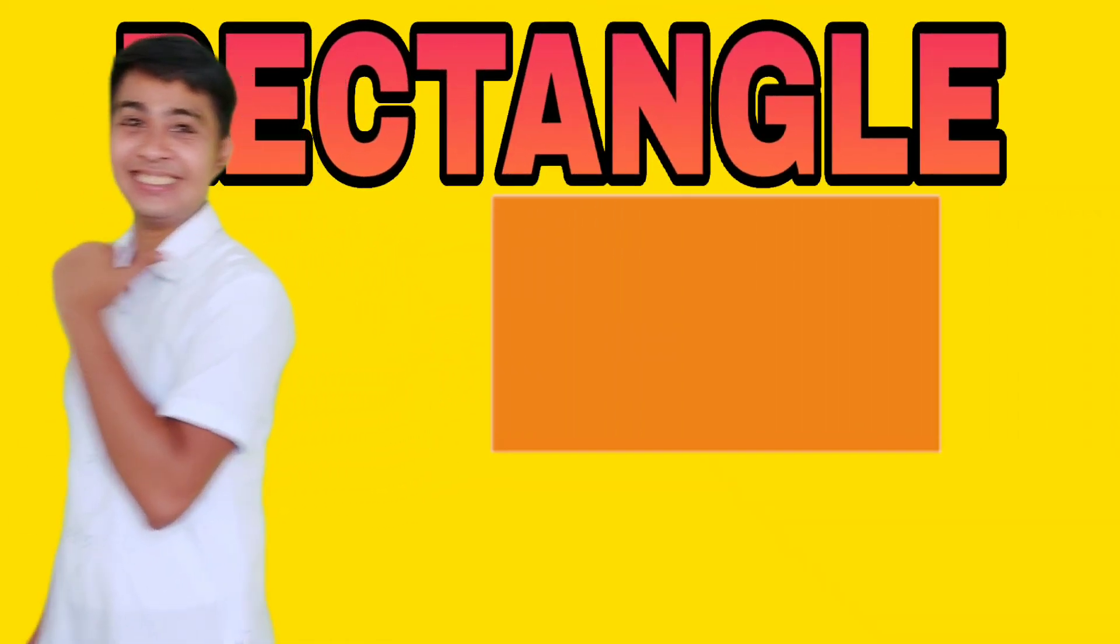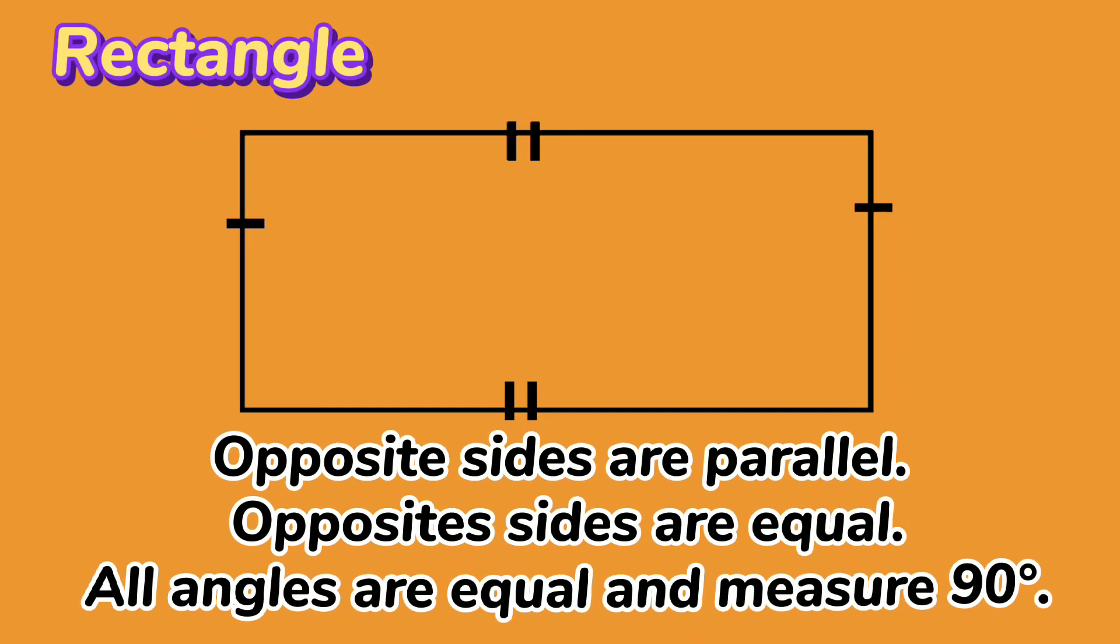The third one is the rectangle. Opposite sides are parallel. Opposite sides are equal. All angles are equal and measure 90 degrees.